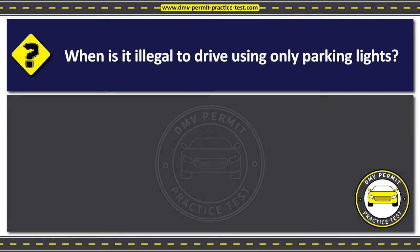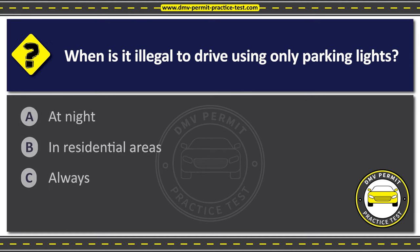Question 9. When is it illegal to drive using only parking lights? The correct answer is Option C: Always. Parking lights should only be used when parking a vehicle. Using parking lights instead of headlights can impair your visibility and make it difficult for other drivers to see your vehicle, increasing the risk of accidents.